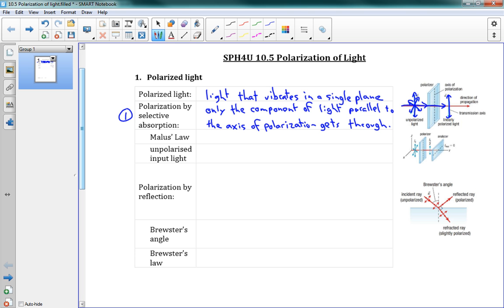And we have a law that goes along with that, Malus's law, which tells us the intensity of the new light that we send light through, and only some of it ends up getting through. So the intensity, the relationship here is that I out, the out intensity, is equal to I in cosine squared theta.